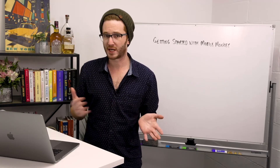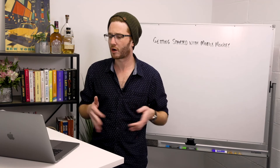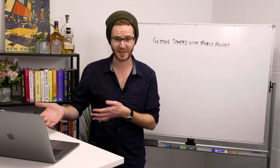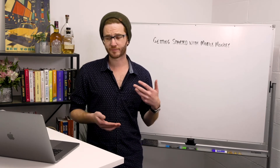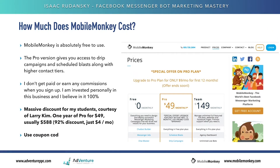That's literally the price of a cup of coffee. I'm not trying to sell you on this — you should start off with the free plan. When we go to create a MobileMonkey account in the next lecture, we're going to start with the free plan. But if you do want to upgrade, you can use coupon code ISAACISAMONKEY and you'll get that $49 a year subscription plan — $4 a month. So it's very, very affordable.